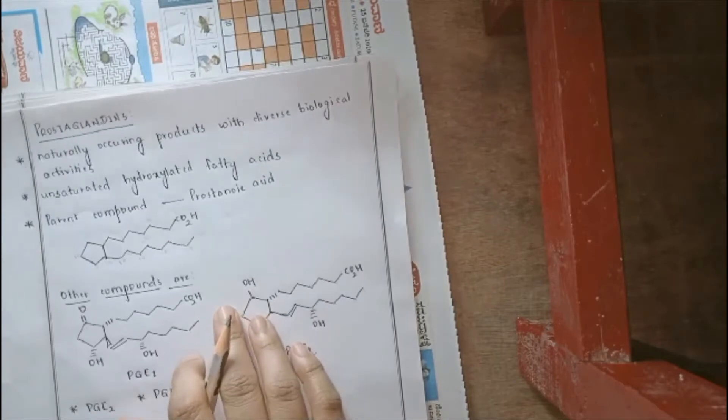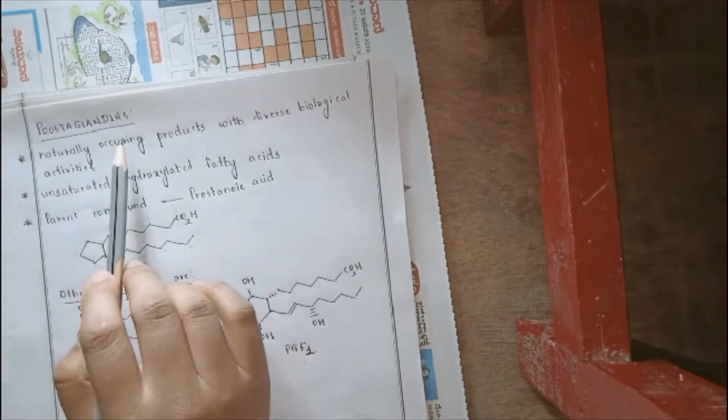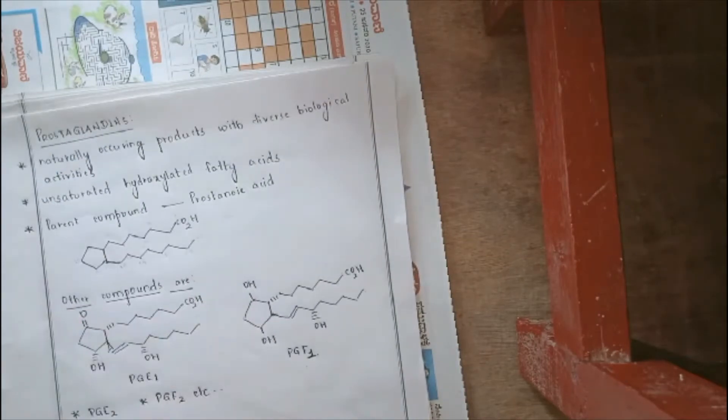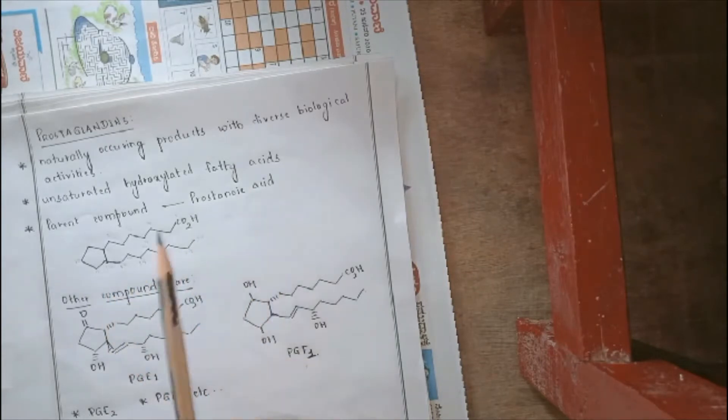Hello everyone, so we will be starting with a topic called Prostaglandins. These are said to be naturally occurring products with diverse biological activities. These have also been associated with various hormones so that they can be associated with them and do various biological activities. So what are these Prostaglandins? These are said to be unsaturated hydroxylated fatty acids. That means these are also a part of fatty acid series.